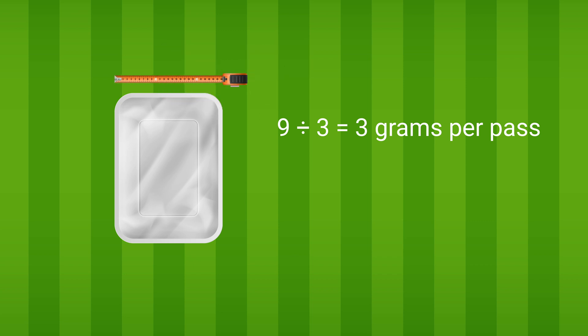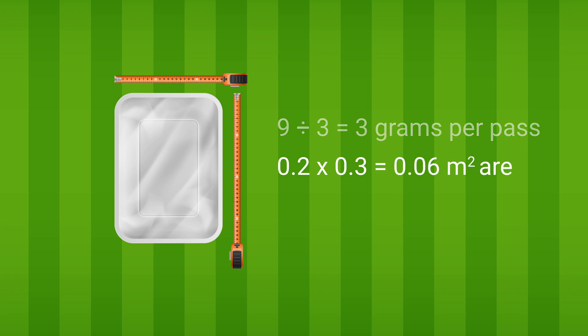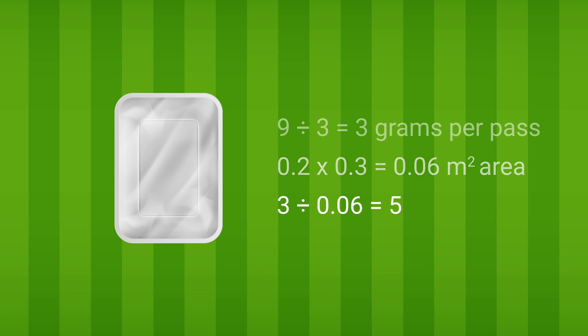If the top of the tray measures 20 centimeters by 30 centimeters, the area of the tray in square meters is 0.2 times 0.3, which equals 0.06 square meters. Now convert this into grams per square meter by dividing the weight for one pass by the area of the tray, which equals 50 grams per square meter for that particular tray.